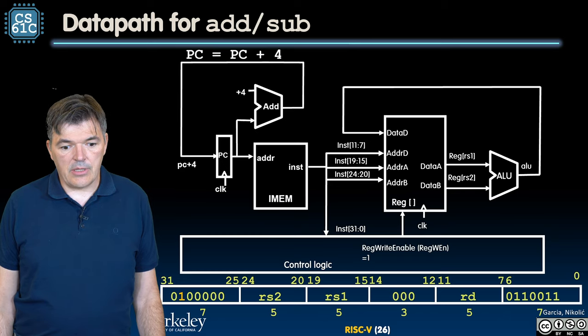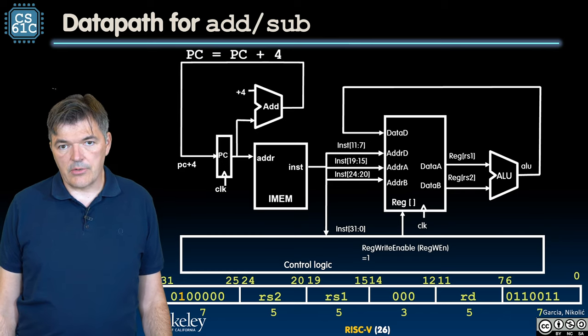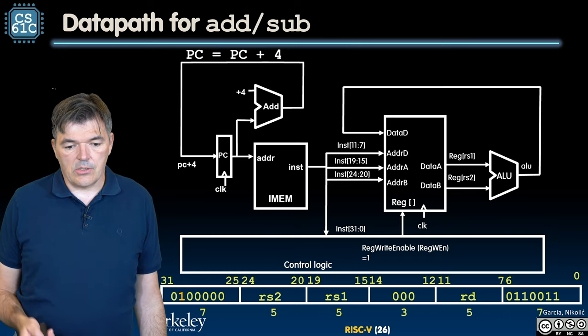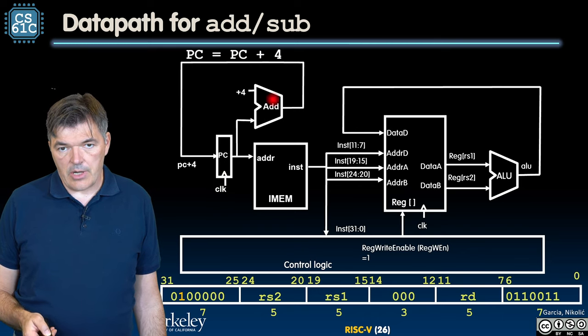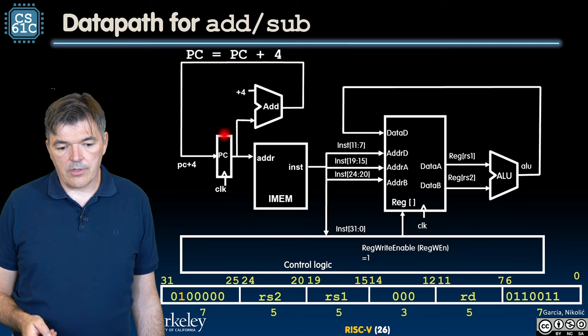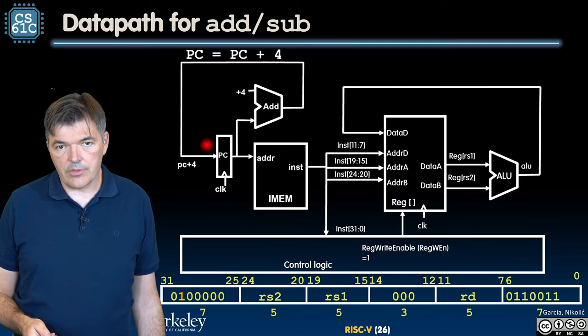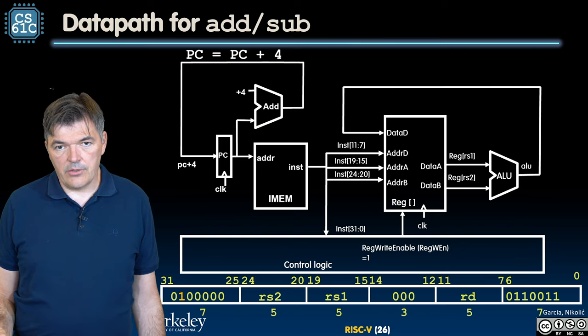Here is our datapath that is capable of doing register-based addition. So we had our program counter, our adder, fixed adder for incrementing the program counter by four bytes to point to the next instruction, our instruction memory, our register file, and our ALU.